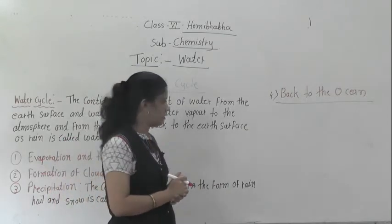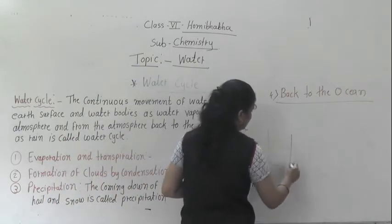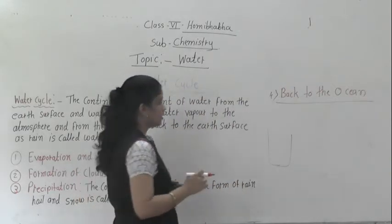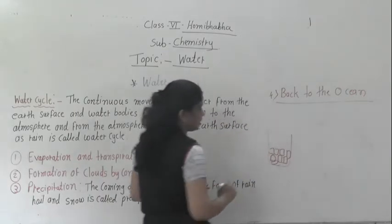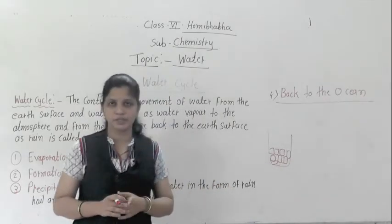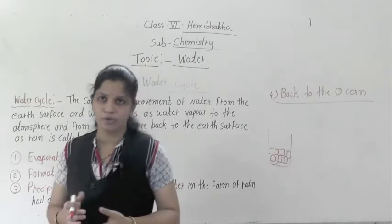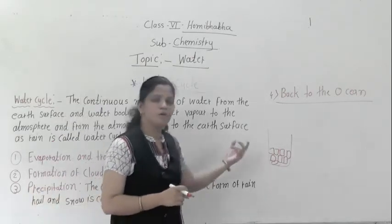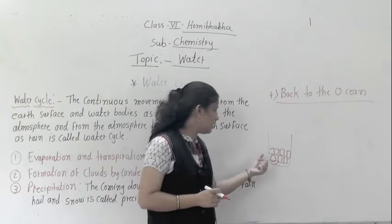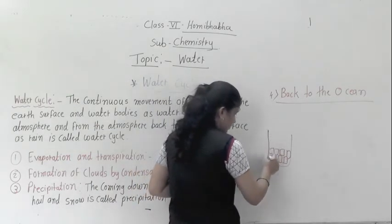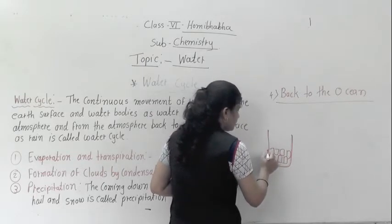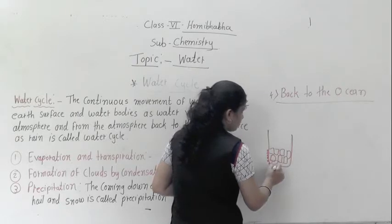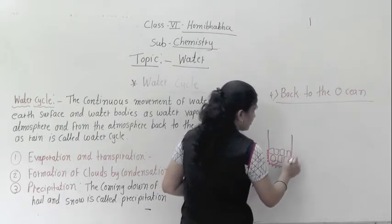Let me show you a diagram for this. Suppose this is one glass. In this glass you put some ice cubes — you can do this activity at home also. Ice is very cold. Now observe what happens: on the outside surface of the glass, you will see small small water droplets.